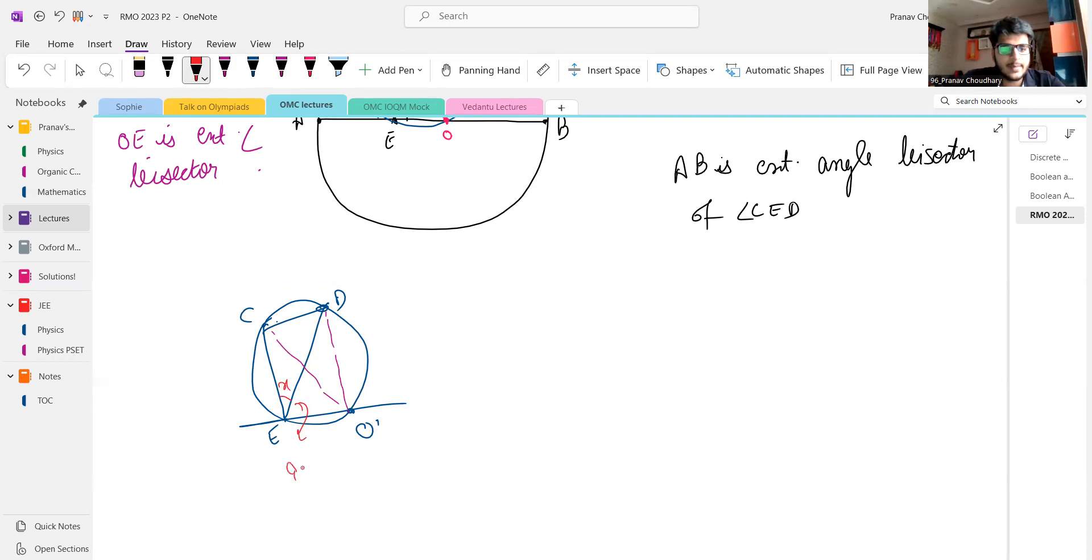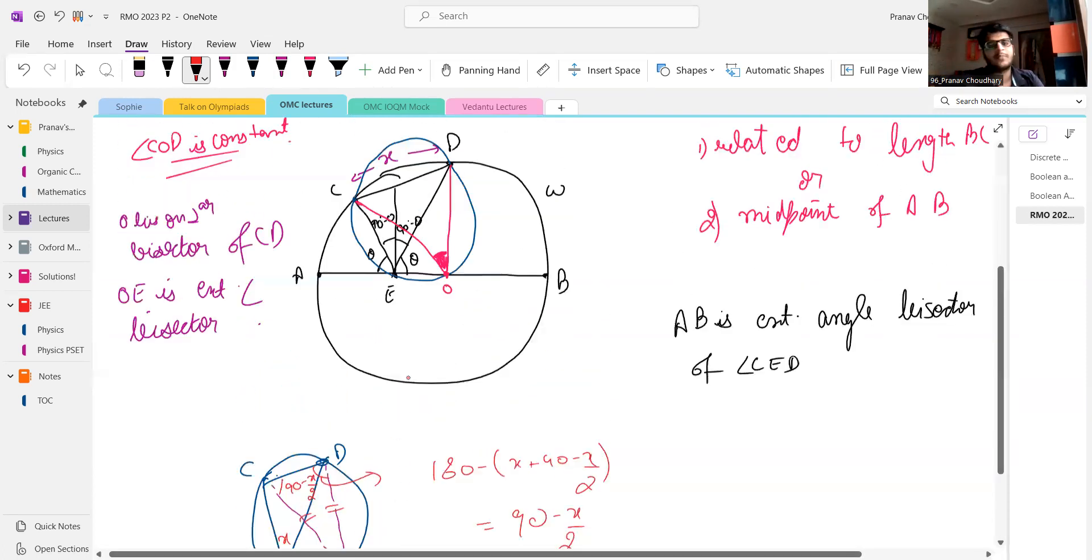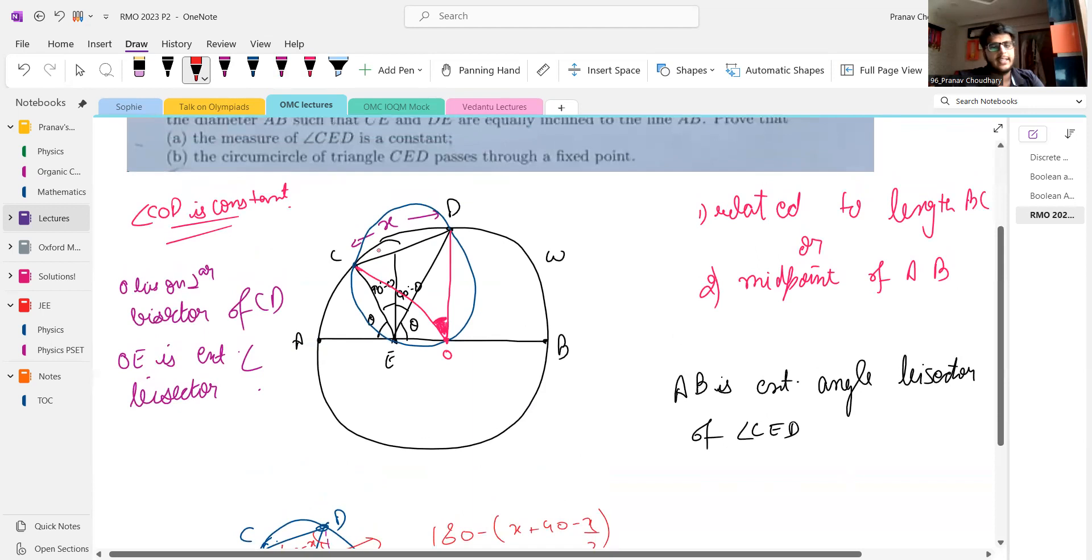So let this angle to be X, this will be 90 minus X by two. Since this is cyclic, this will be 90 minus X by two. And this angle will be 180 minus X plus 90 minus X by two, which is 90 minus X by two. So OC comes out to be equals to OD. So basically O is the point intersection of perpendicular bisector of CD and external angle bisector CED. So you get that COED is cyclic.